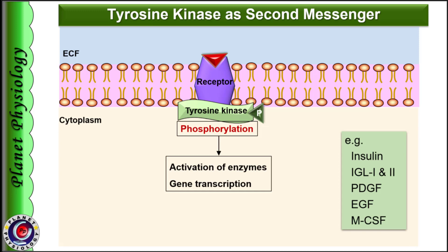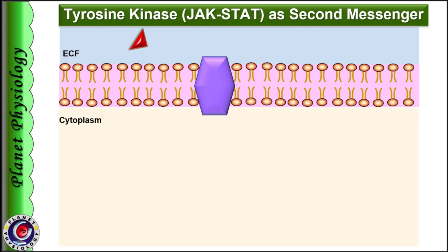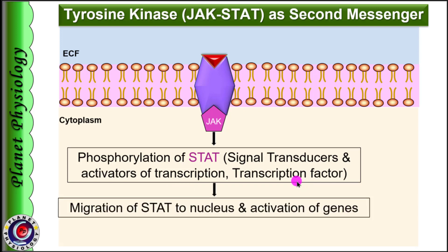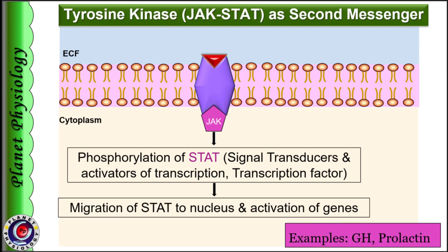In another variety of hormone receptor, the hormone-receptor complex exposes the intracellular tyrosine kinase binding site on the receptor itself. Once this binding site is open, the cytoplasmic kinase called Janus kinase binds to this site and gets activated. Activation of Janus kinase phosphorylates STAT protein — STAT stands for Signal Transducers and Activators of Transcription — which is a transcription factor. STAT then migrates to the nucleus and causes activation of genes. Since this pathway involves activation of Janus kinase and STAT proteins, it is called the JAK-STAT pathway. Growth hormone and prolactin act via this pathway.